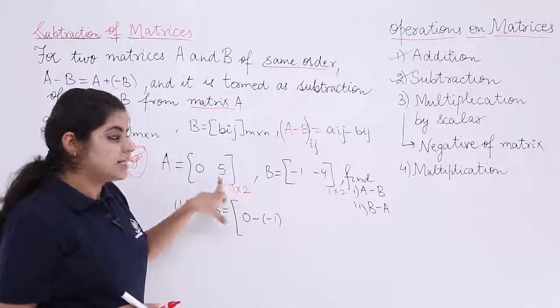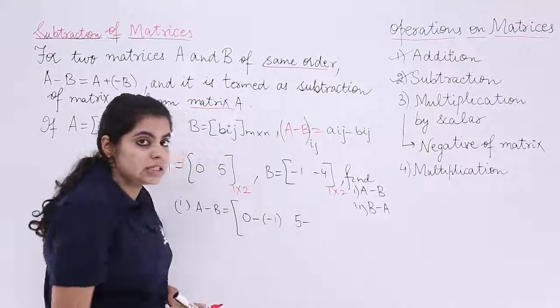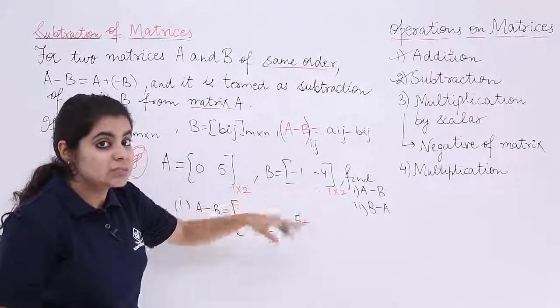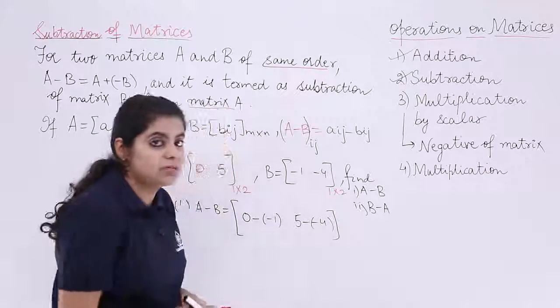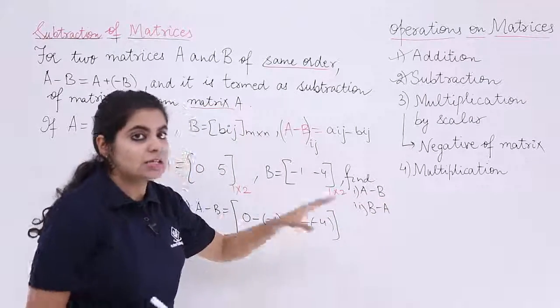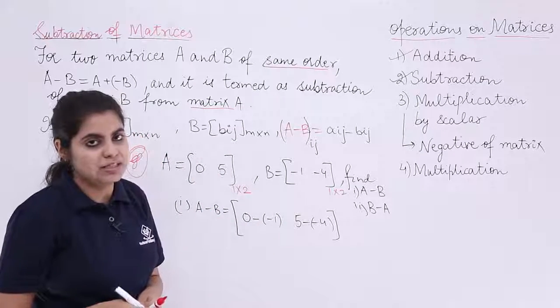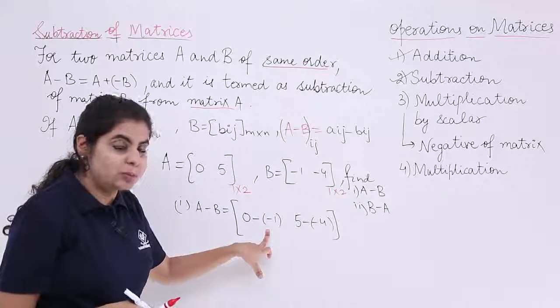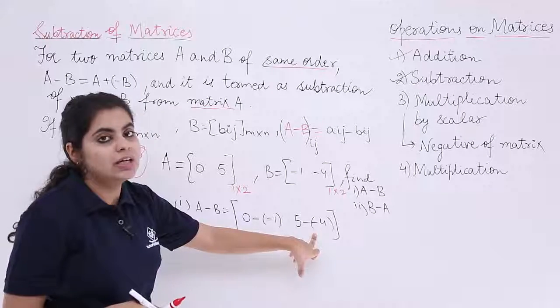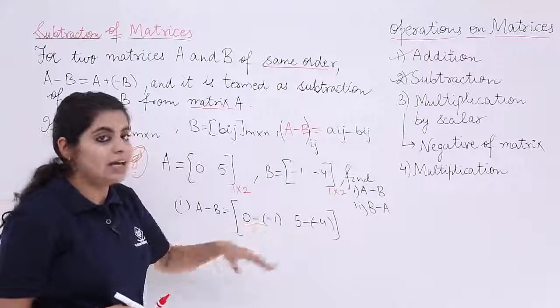Again the next element you take up, it is 5 minus this element which is minus 4. Because we are doing A minus B so I have to write the elements of A first then of B. Now let's compute the answer: 0 minus minus 1, that means 0 plus 1 which is 1, and here it is 5 minus minus 4 which is 5 plus 4 which is 9. So it is 1 and 9.